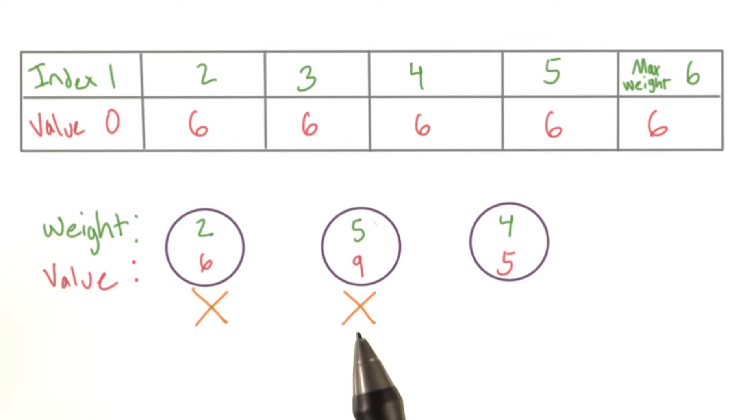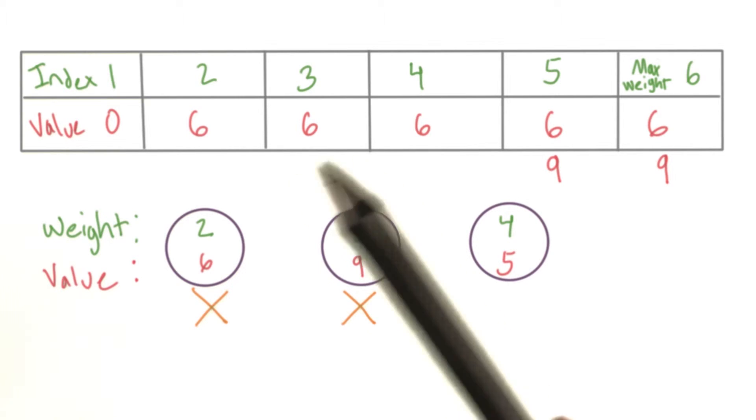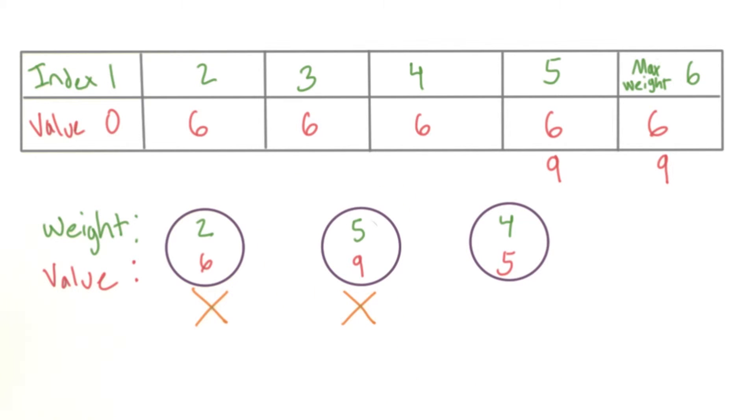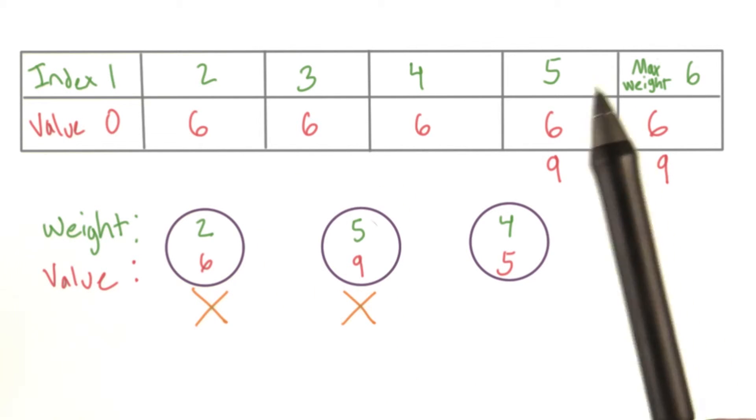We look at the next object. Again, we can't change anything until index 5. The value of this object is bigger than the max, and it takes up the whole weight. So we replace the max value for weights 5 and 6.